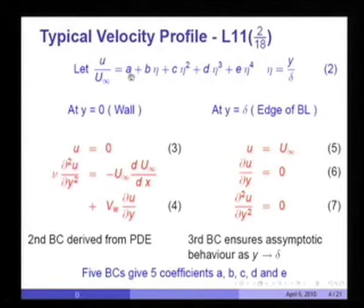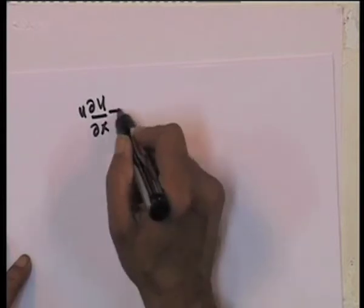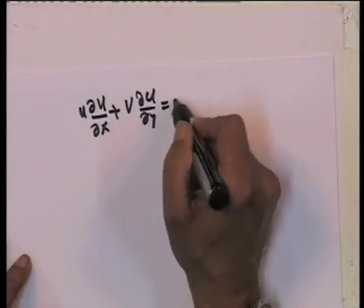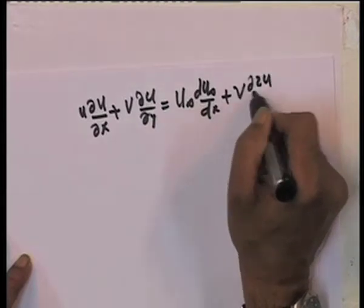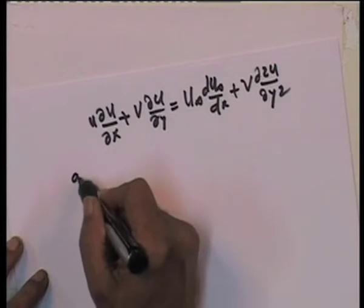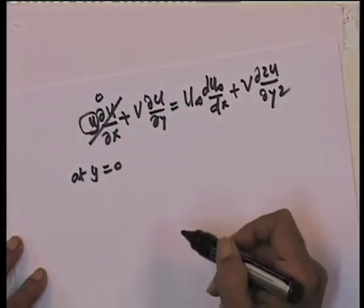We let u/u∞, the dimensionless velocity, be a polynomial in η = y/δ: u/u∞ = a + bη + cη² + dη³ + eη⁴. There are 5 constants to be determined — a, b, c, d, and e — and we do this by invoking 5 boundary conditions. At the wall (y = 0), u = 0.